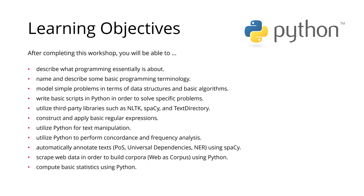Finally, we also computed some basic statistics. The whole idea here is to show you that Python, similarly to R, can also be used as a very powerful tool for statistical analysis, and is widely used in machine learning, AI, and data science in general. It's a very capable language, and a very capable infrastructure if we look at all the libraries available there for free.